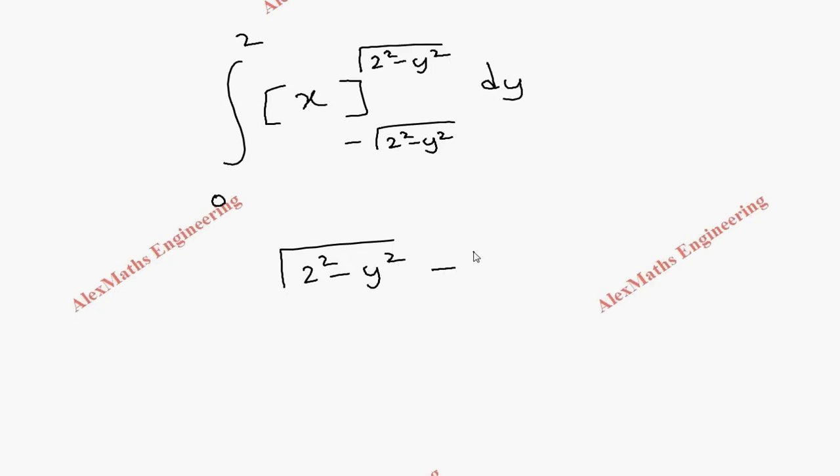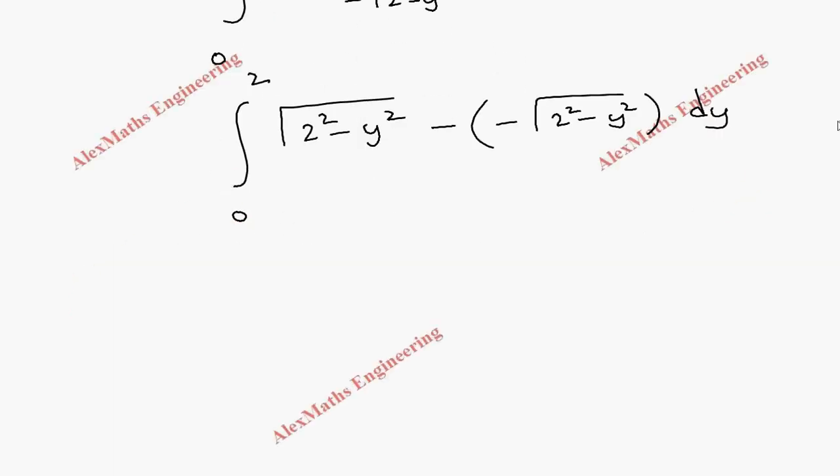Minus of minus √(4-y²) into dy, from 0 to 2 integral. This will become plus, so it becomes 2 times √(4-y²) into dy, integral 0 to 2.